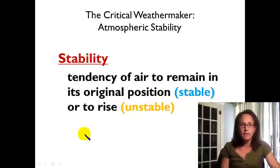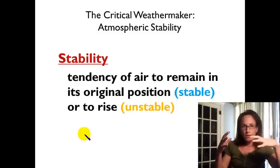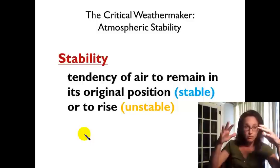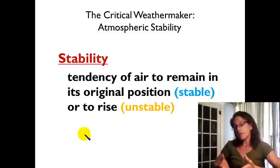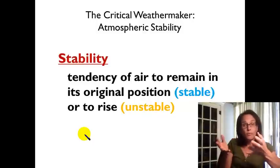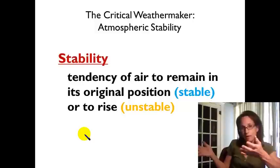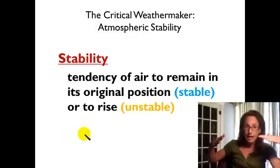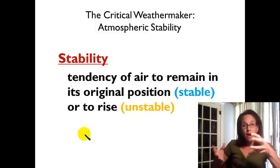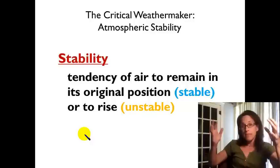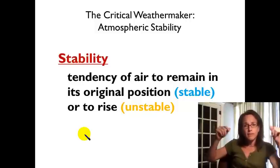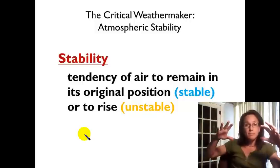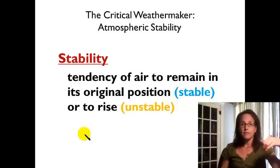What we're talking about with stability of air masses is: are those air masses rising, or are they tending to stay in the same position, or tending to sink? If an air mass is rising on its own — with nothing pushing it up, no mountain range, no wedge of colder air — then we consider it unstable, because it rises due to its own buoyancy. If it tends to stay in the same position or wants to sink, then we consider that stable.